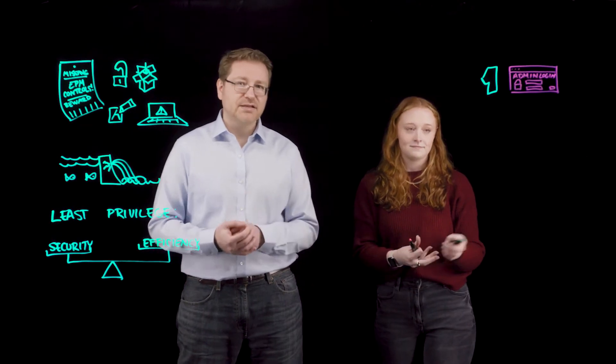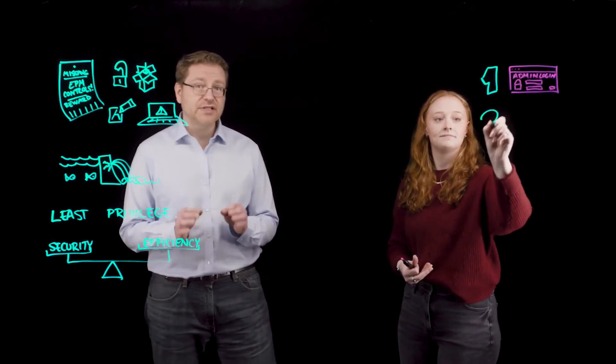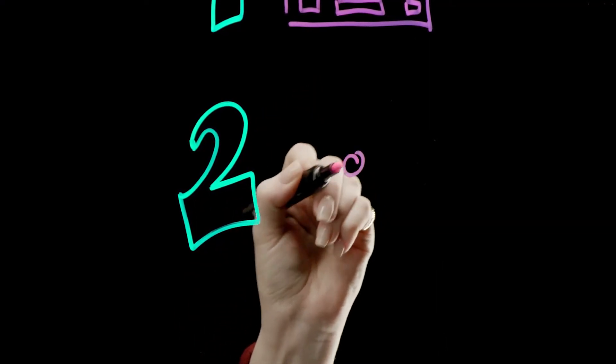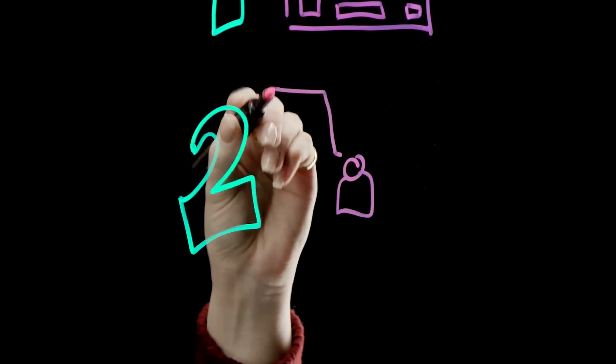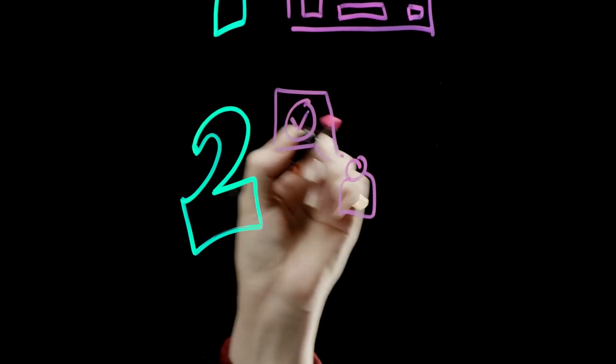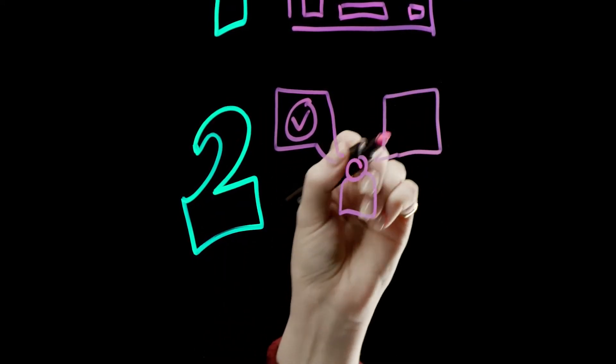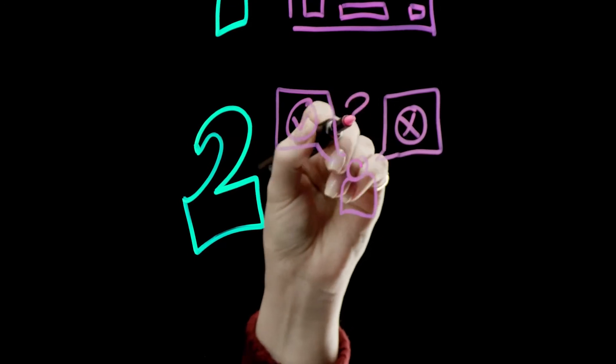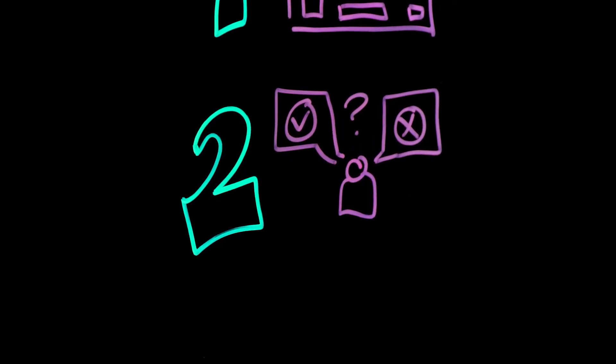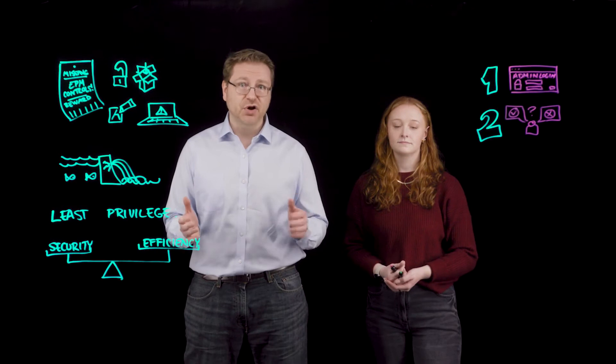And that takes us to number two. Enforce least privilege. You need the ability to set policies for granting or denying permissions on an application level. Look for application control tools that allow you to create conditional and comprehensive policies for every user group, from HR to DevOps.